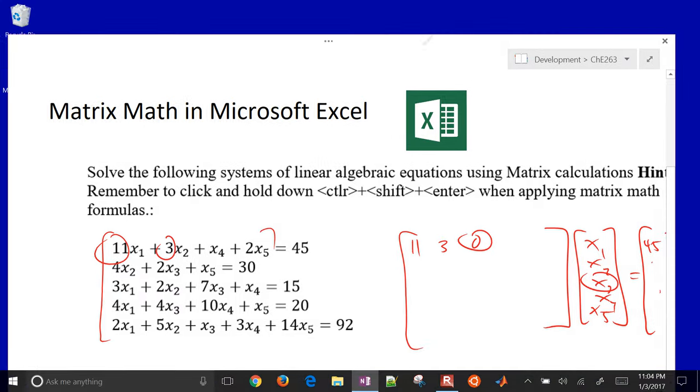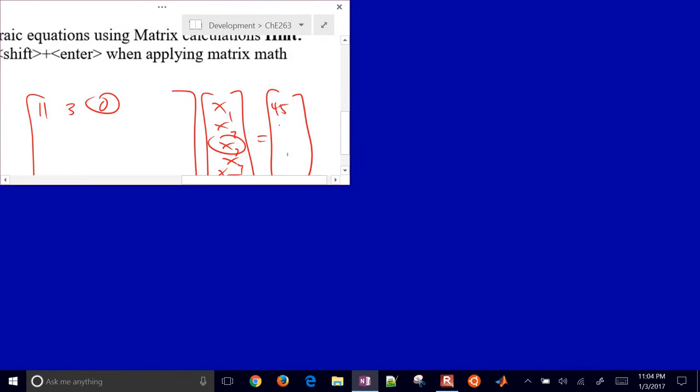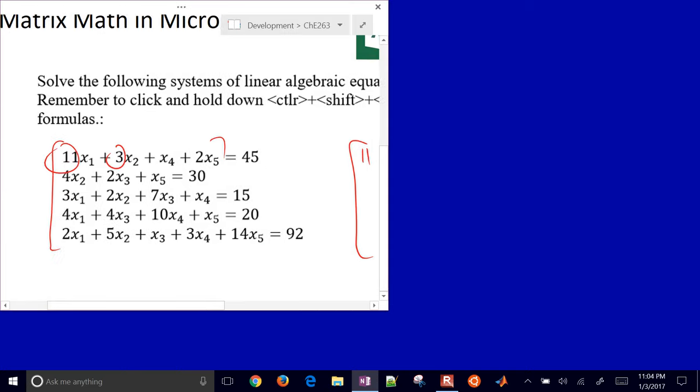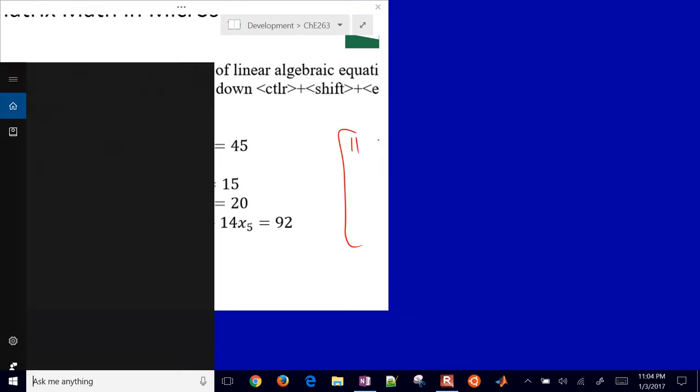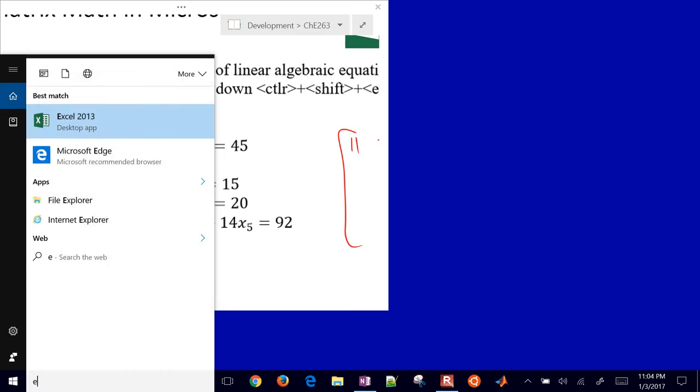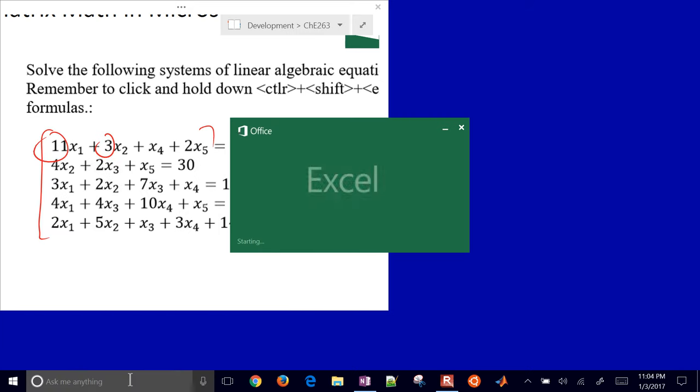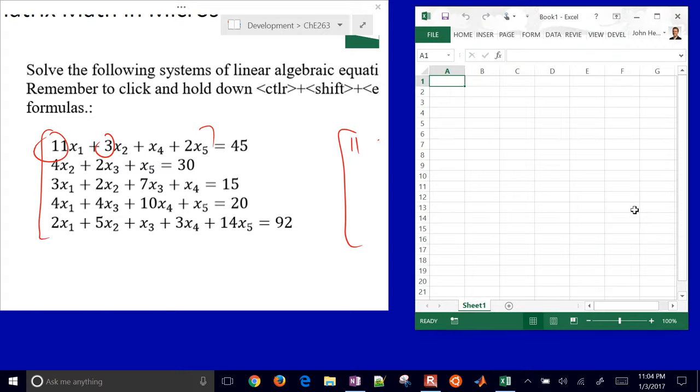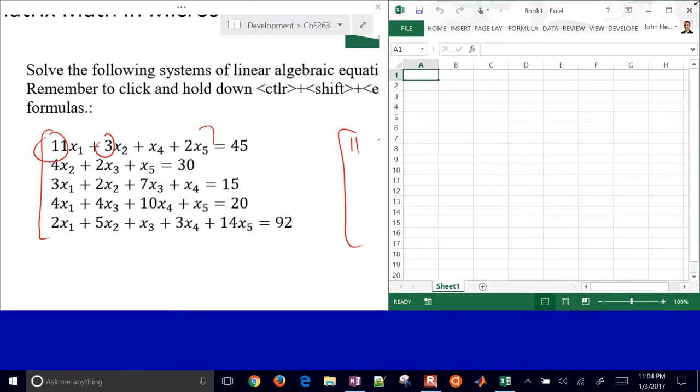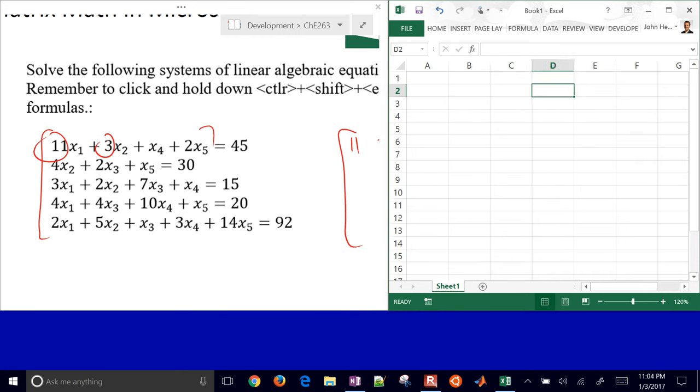So let's go ahead and put this in Excel. I'll make this just a little bit smaller, move it over to the side so we can see what we're inputting into Excel, and then start up Excel. Now the one trick with doing the matrix multiplications or the inverse is that you have to do the ctrl-shift-enter when you're doing some of these calculations. I'll show you how to do that. So let's just go ahead and put in our values, 0, 1, and 2.